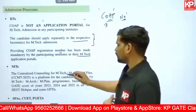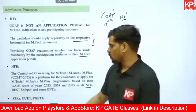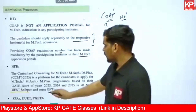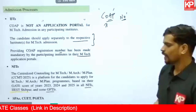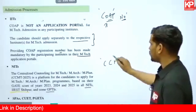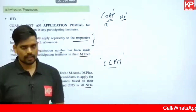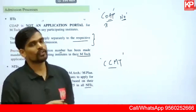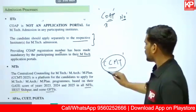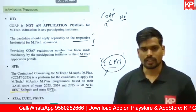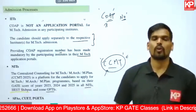Admission into NITs is through CCMT — the Centralized Counseling portal for M-Tech, M-Arch, and M-Plan. IIEST Shibpur and some other Government Funded Technical Institutes (GFTIs) also offer admission through CCMT. CCMT is not an acceptance portal like COAP; it is a counseling portal. Unlike COAP, CCMT requires an application fee, but you pay once for CCMT rather than individually per NIT. The official CCMT brochure is expected in June.